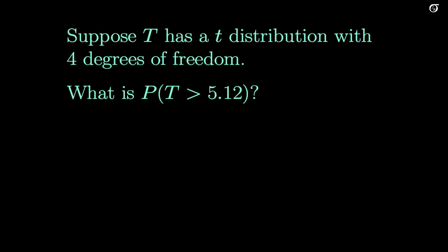We'll look at a couple of quick examples of finding areas under the t-distribution. Suppose we have a random variable t that has a t-distribution with four degrees of freedom, and we want to know the probability that the random variable t takes on a value greater than 5.12.